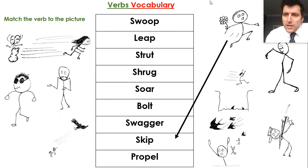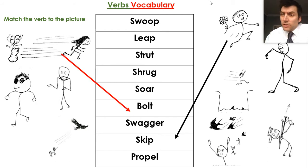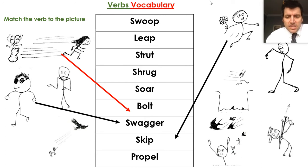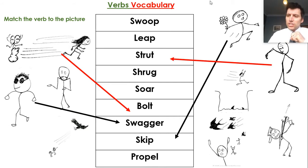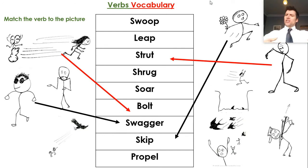Let's check how we've done. Skipping — that's a light, bouncy movement. The second one shows a very fast-moving character, so they're bolting. The third character is comfortable, swaggering around the place. A word similar in meaning to swagger is strut — it shows confidence, somebody owning a room as they walk in.